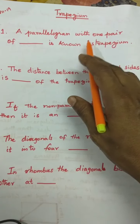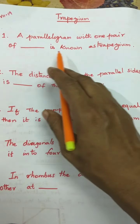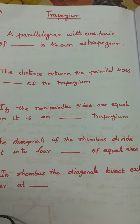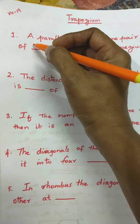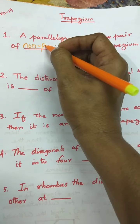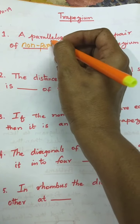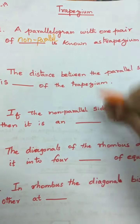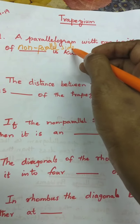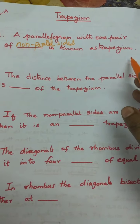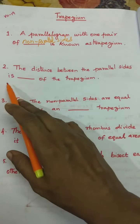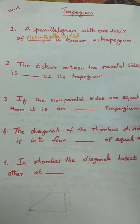A parallelogram with one pair of non-parallel sides is known as a trapezium. The distance between the parallel sides is the height of the trapezium.